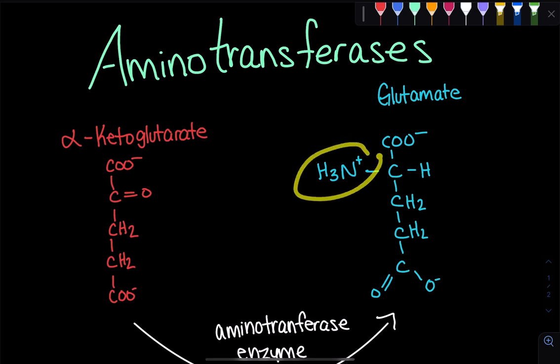The aminotransferase reactions are helpful in creating these molecules that have ammonia in them. Because when we form this glutamate from alpha-ketoglutarate, this glutamate will then go on to take part in the urea cycle. Because remember, in the urea cycle, we're donating ammonias.